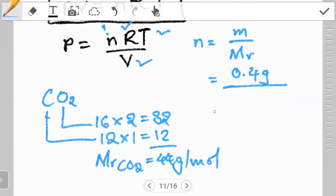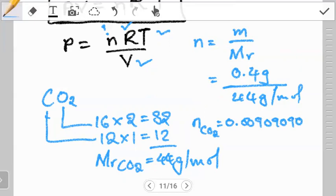Now meaning that the number of moles of CO2 will be equal to 0.4 divided by 44 grams per mole. When you work out that, you have the number of moles of CO2 will be equal to 0.00909 moles.